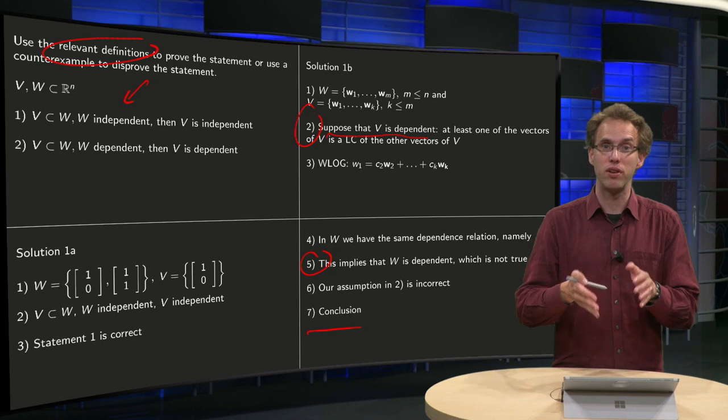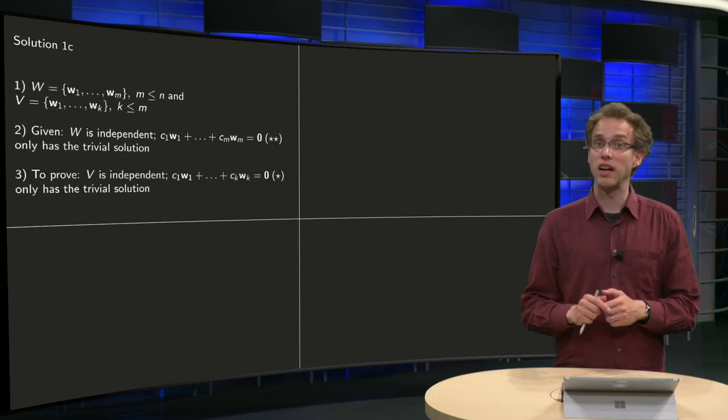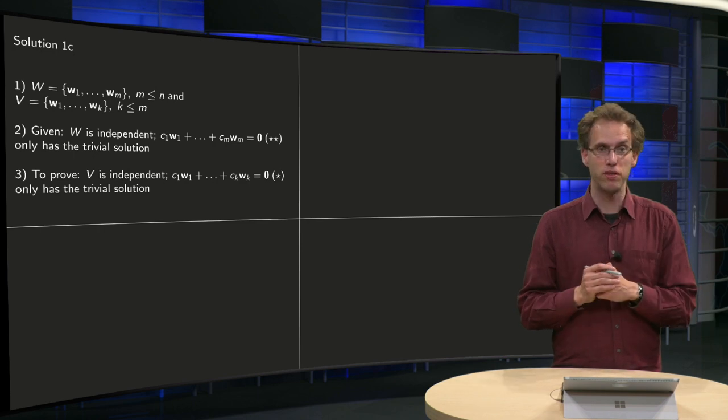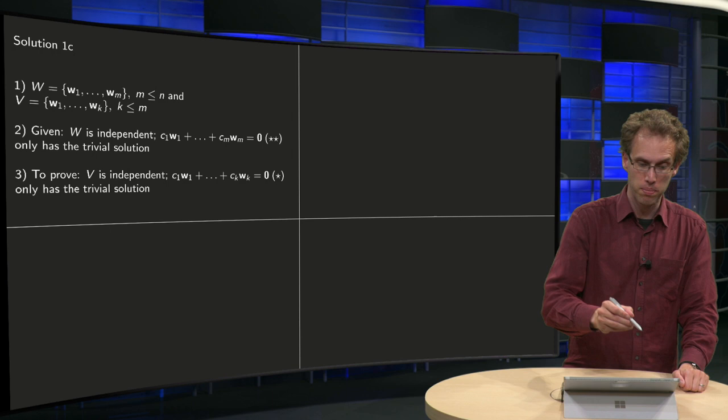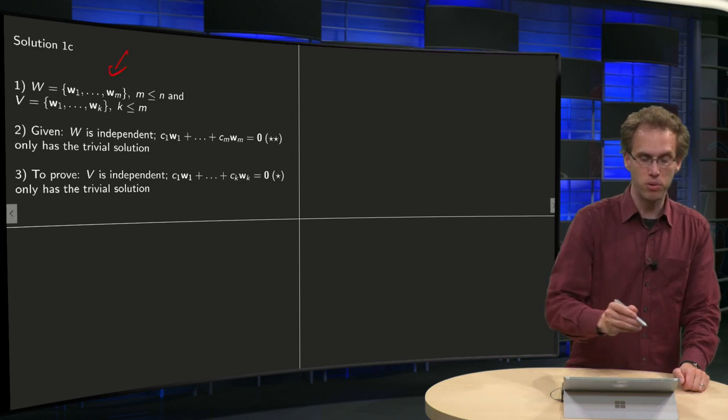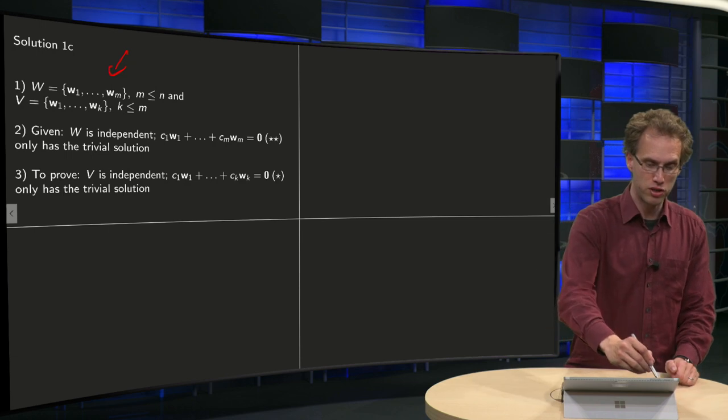Furthermore, further on, the whole proof is fine. So, let's try now to prove this statement using the definitions. So, same first step. So, a W consists of m vectors, m is equal to n, and V is a subset of that,